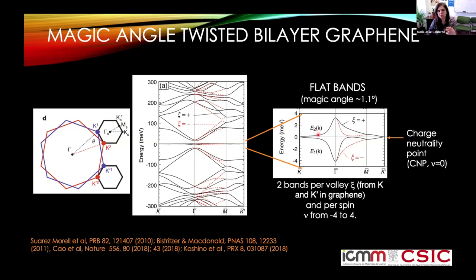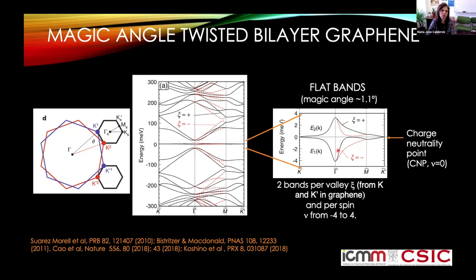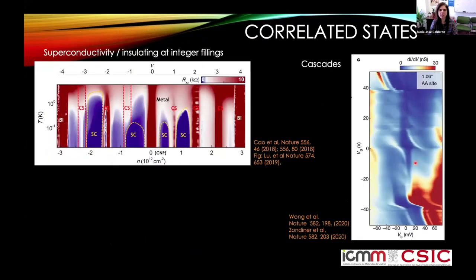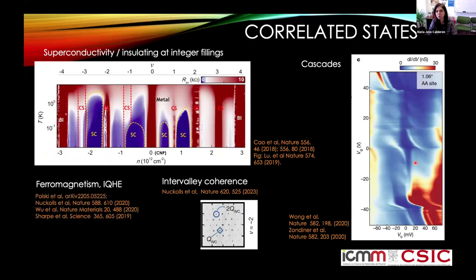We have two bands per valley and per spin. One valley comes from the K points of the graphene layers and the other from the K' points, shown by black and red curves respectively. With spin degeneracy, we can accommodate up to eight electrons total. The charge neutrality point is at the Dirac touching, protected by symmetry — the same as in single-layer graphene. We can dope from minus four to four. These very flat bands imply that electron-electron interactions are relatively very important in these materials.